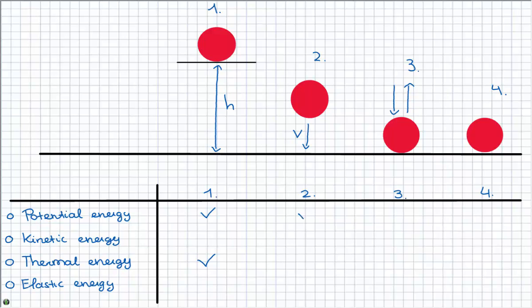In situation 2 there is still potential energy. Also now there is kinetic energy. The ball is moving. There is still thermal energy because the ball still has a certain temperature.